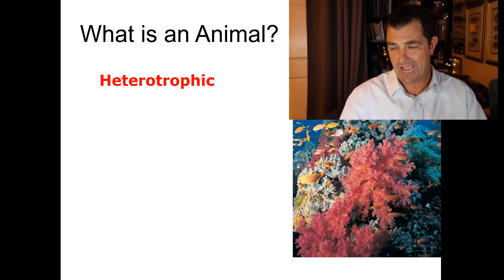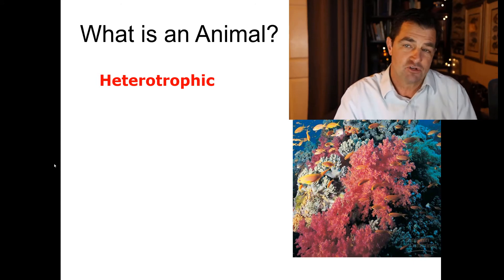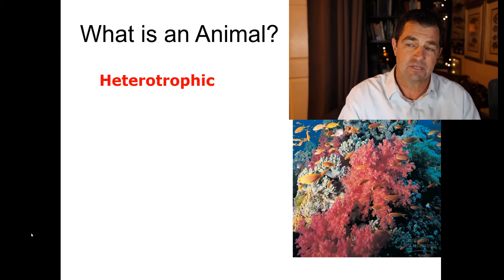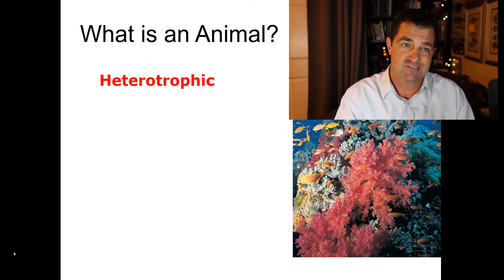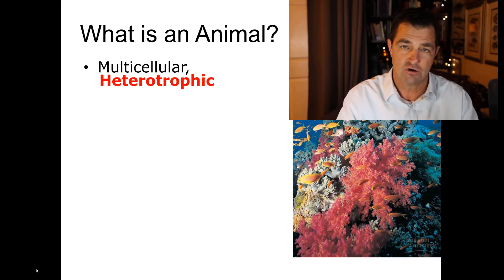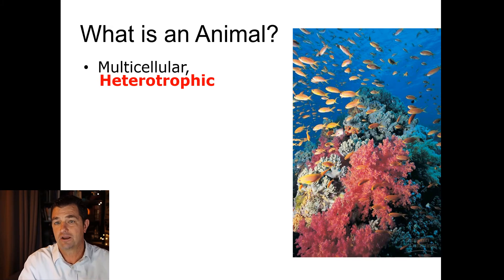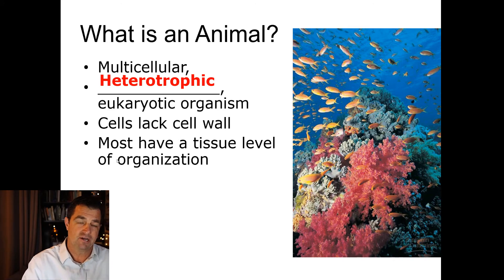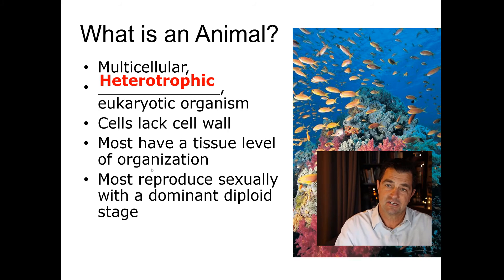First, let's talk about how we define what an animal is. You think about dogs, people, or monkeys — typical animals you're familiar with — but we need a specific definition because some animals we deal with in the marine environment may not be what you're typically thinking. Animals are multicellular, heterotrophic — meaning they get their carbon and energy by consuming other organisms, not autotrophs. They are eukaryotic, do not have a cell wall, most have a tissue level of organization, and most reproduce sexually with a dominant diploid stage — two sets of genetic material.